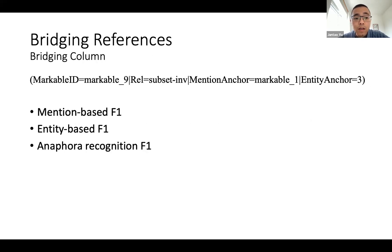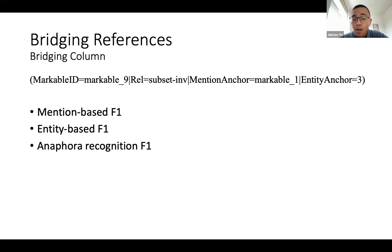For bridging references, annotation is in the bridging column, with both mention anchors and entity anchors annotated, as well as an option to specify the relationships between them. Historically, two different F1 scores are computed: mention-based and entity-based. The mention-based is stricter — the antecedent must be exactly the same mention as retrieved. The entity-based uses entity anchors, where it counts as correct as long as the antecedent belongs to the same cluster. As a by-product, we also give anaphor recognition F1 scores for bridging references.